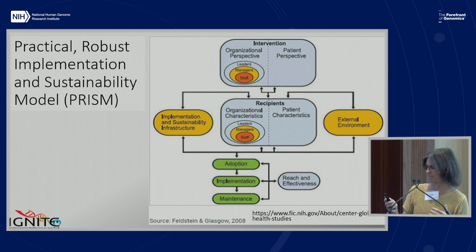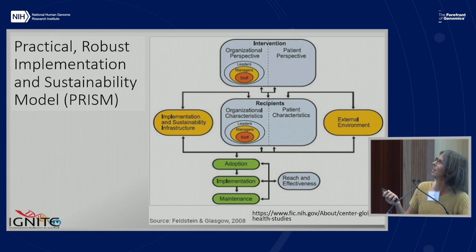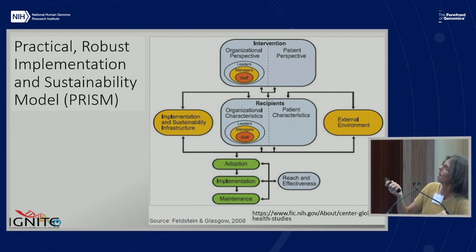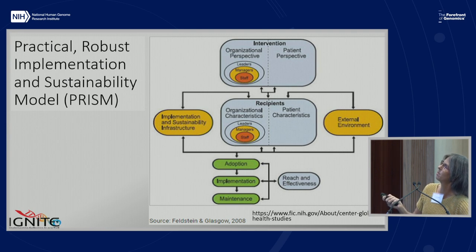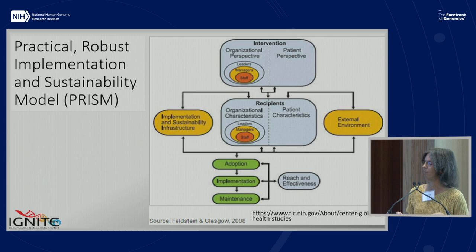This is the PRISM framework. Up here you can see they focus on characteristics of the intervention, the organization's perspective on the intervention, the patient's perspective, who's going to be receiving the intervention, characteristics of the organization and individuals on the receiving end, what the external environment and infrastructure are like, and then going through adoption, implementation, and maintenance phases — which sort of led to the RE-AIM framework later.